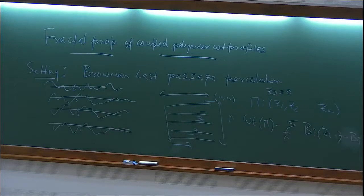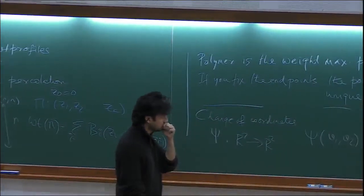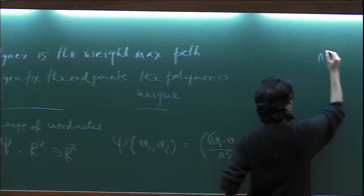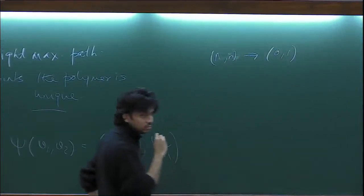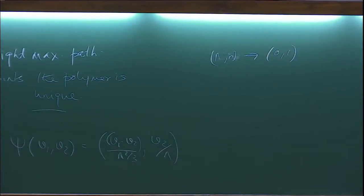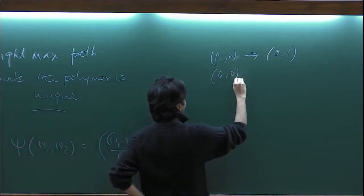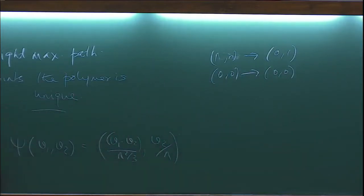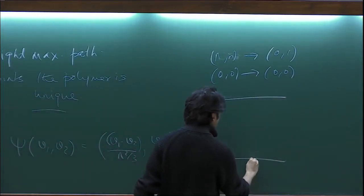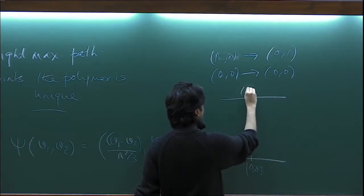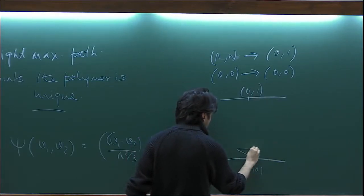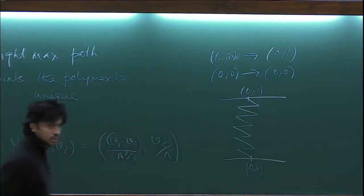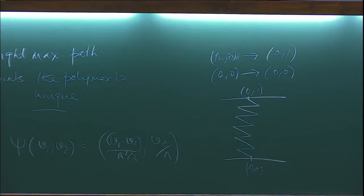These paths, which look like staircases — you go a little bit here, then go up, then again a bit — get mapped to what are known as zigzag paths. The space becomes: origin is here, the N,N point is somewhere here, and the paths get mapped to something like a zigzag. This just brings everything into an order-one environment.